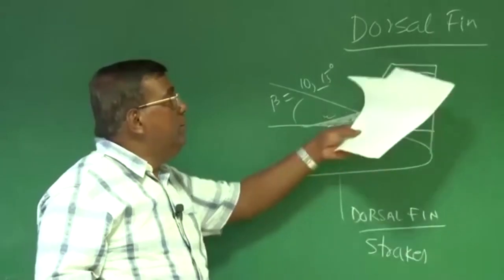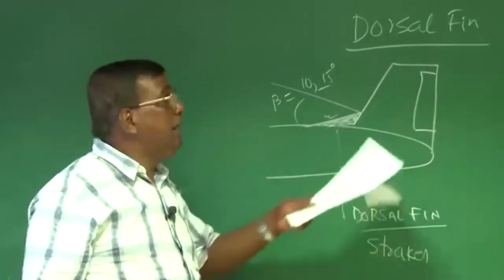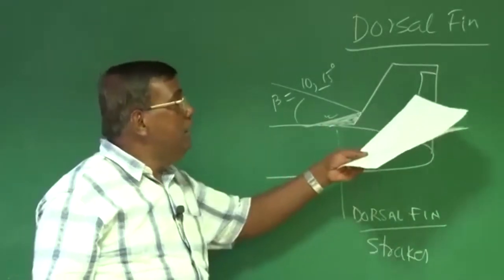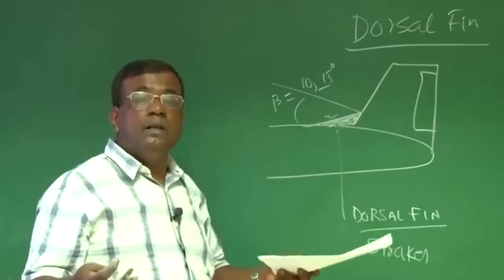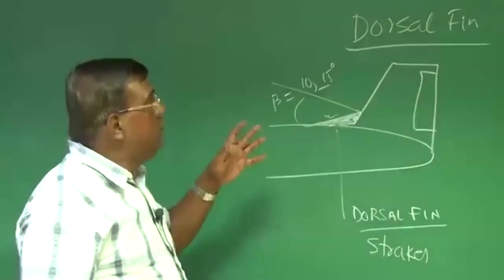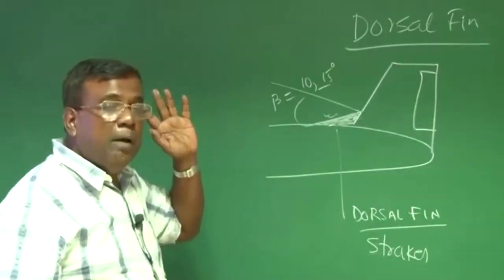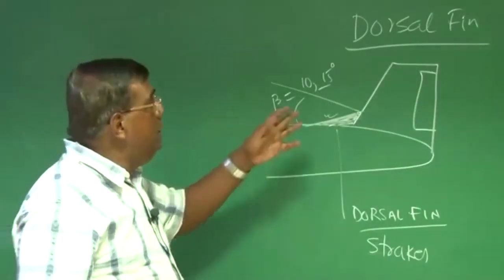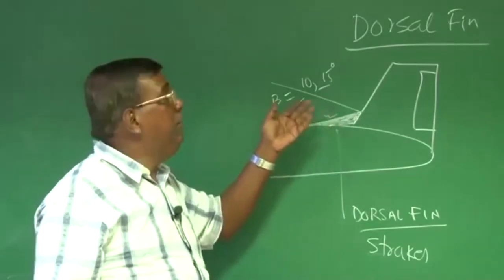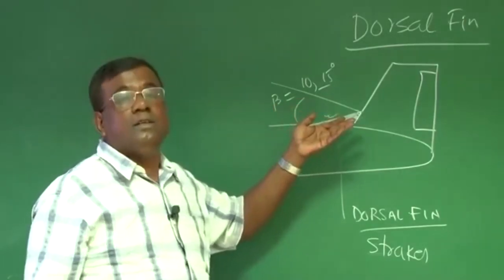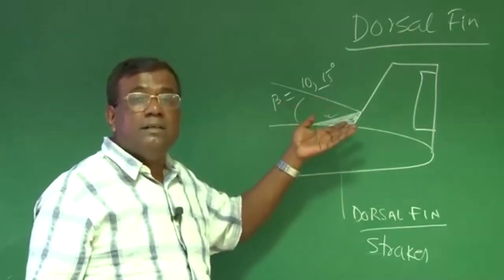So the vertical fin effectiveness will increase and hence rudder effectiveness also increases. What the leading-edge strake was doing for the Piper Saratoga, the dorsal fin is doing the same thing but for the lateral direction — lateral stability and directional stability.